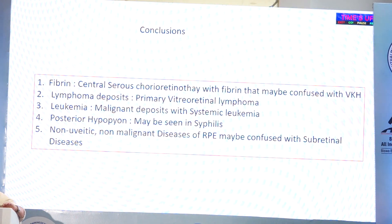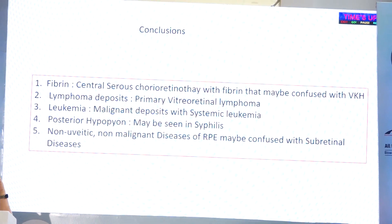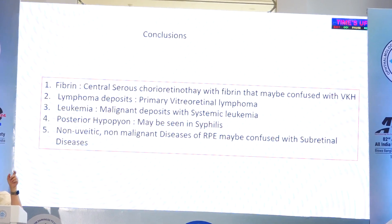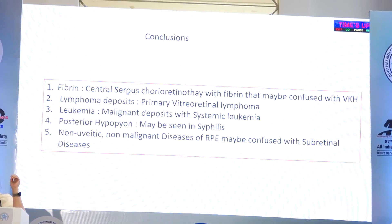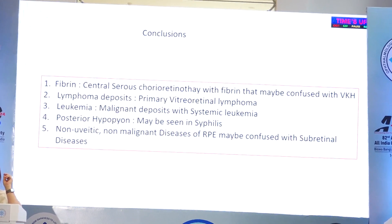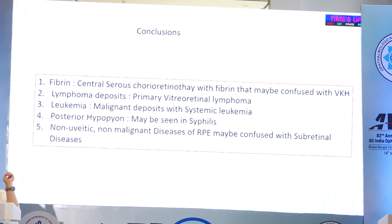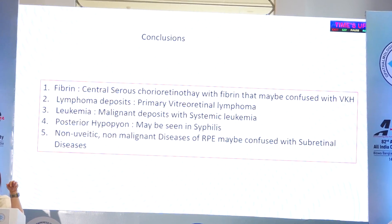To conclude: the first thing that gives you an idea that something is in the subretinal space is OCT — it is in the subretinal space, not continuous with the retinal pigment epithelium, and not part of the retina. Anatomically it does not fit any definitive configuration — it is just a deposit in the subretinal space. The etiologies are very different: fibrin mostly happens in central serous retinopathy and VKH. It is important not to confuse VKH and CSR, especially when there is fibrin, and the clear dot sign will be in CSR and not in VKH.